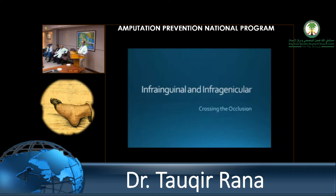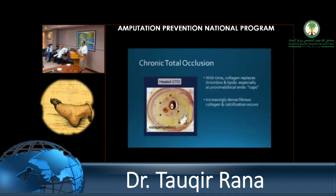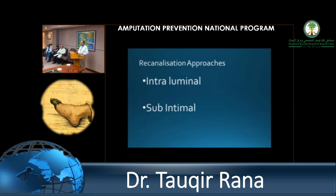When you go to infragenicular and infrainguinal disease, the complications and severity increase. It can range from focal or segmental occlusion to complete flush occlusion to a chronic total occlusion extending from the flush femoral artery down to the popliteal artery. The problem is that when a CTO initially occurs it's just a thrombus, but gradually it becomes a large, thick, hard collagen. Crossing that lesion is very difficult — that's where the endovascular process comes in. You can do a bypass, but that carries associated risks of complications and anesthesia.